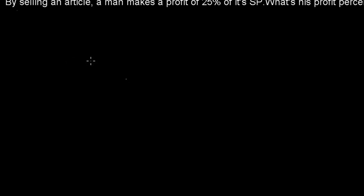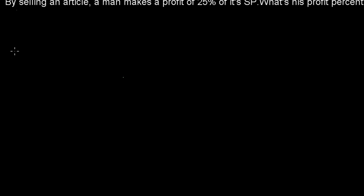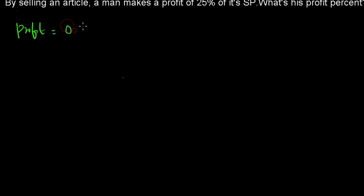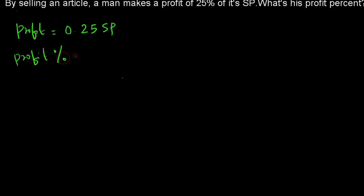Example 2: By selling an article, a man makes a profit of 25% of its selling price. What is the profit percentage? The only information given is that the man is making a profit of 25% of the selling price, meaning profit equals 0.25 SP. We have to find the profit percentage using the formula: profit percentage equals profit divided by cost price, into 100.